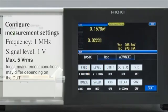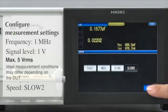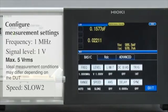Set the speed to Slow 2. By selecting Slow 2 as the measurement speed, you can achieve more stable measurements.